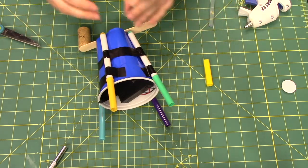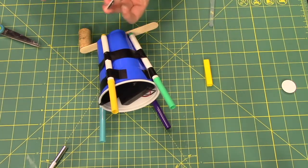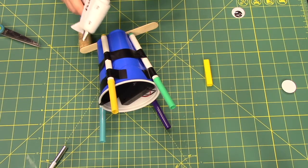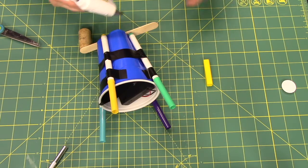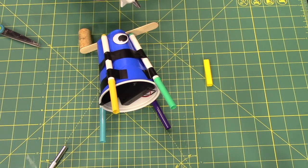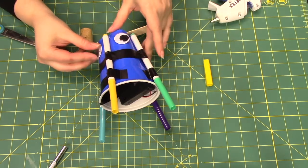Then, just for a final touch, I'm going to add some googly eyes, so I'm just going to hot glue those to the very top of the cup, and now our art bot has personality.